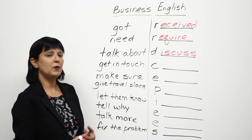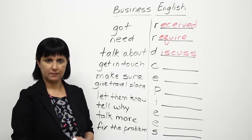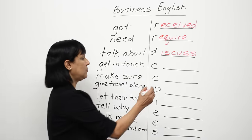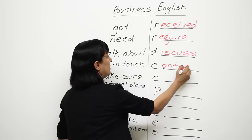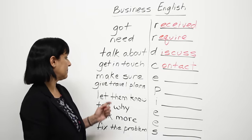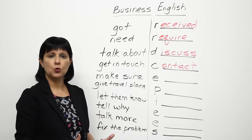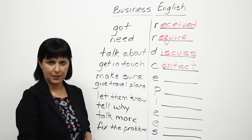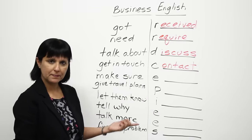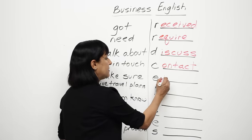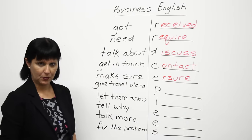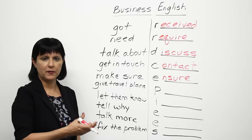Next one. 'How do I get in touch with her?' What word could you use instead? 'How do I contact her?' Good. Next: 'Please make sure you arrive on time.' Which business word could you use instead of 'make sure'? Please ensure. Please ensure you arrive on time.